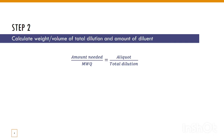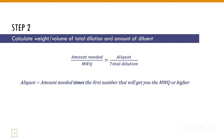The aliquot is determined by multiplying the amount of drug we need by the first number that gives us the minimum weighable quantity or higher. For example, if the amount of drug to weigh is 5 mg and the minimum weighable quantity is 100 mg, we multiply 5 by 20 to give us 100 mg — so our aliquot will be 100 mg. The amount of diluent is then calculated by subtracting the aliquot amount from the total dilution.